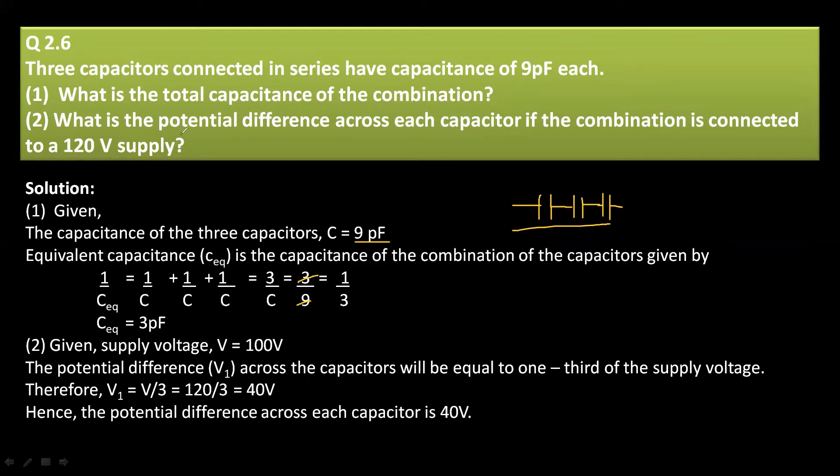Now question number two is saying that what is the potential difference across each capacitor if the combination is connected to 120 volt supply? If the combination is connected to 120 volt supply, then what is the potential difference across each capacitor? The potential difference across each capacitor will be equal to one third of the supply voltage.